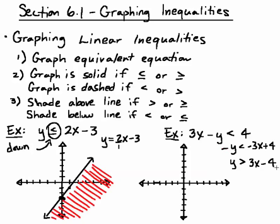And again, we graph the equivalent equation, which is y equal 3x minus 4. So our y-intercept is negative 4. Our slope tells us to go up 3 and to the right 1. We draw our line through that.